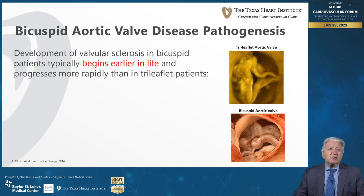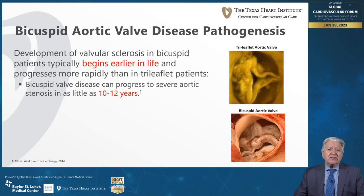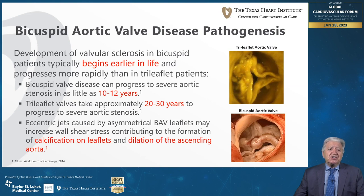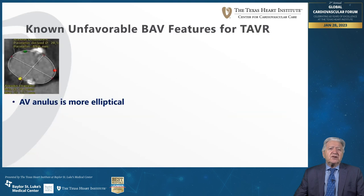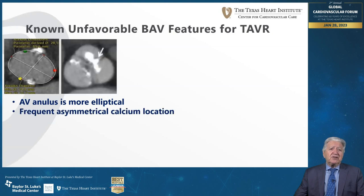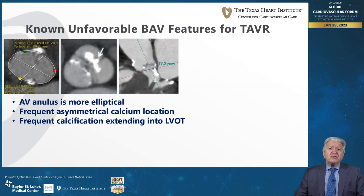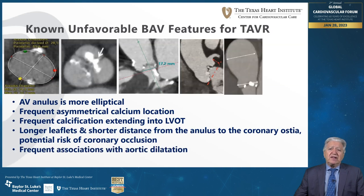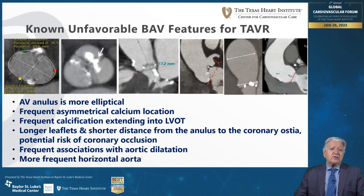There are significant differences between bicuspid aortic valve and tricuspid aortic valve. The disease progresses faster and earlier in life in patients with bicuspid aortic valve in comparison with tricuspid aortic valve. In addition, calcification develops earlier as far as leaflets are concerned, along with progressive dilatation of the ascending aorta and more frequent horizontal aorta.